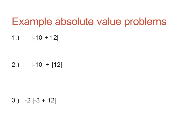A couple of examples. The absolute value of negative ten plus twelve: do what's inside first to get |2|, and the absolute value of two is just two. For the next one with two separate absolute values: |-10| is 10, |12| is 12, so we get 22. For the last one, do what's inside each absolute value first: negative three plus twelve is nine, then negative two times nine gives negative eighteen as the final answer.